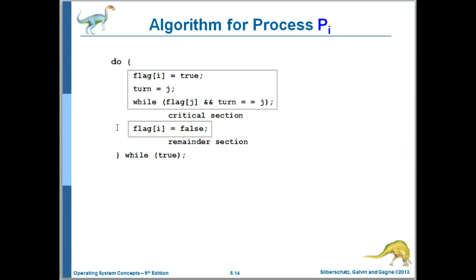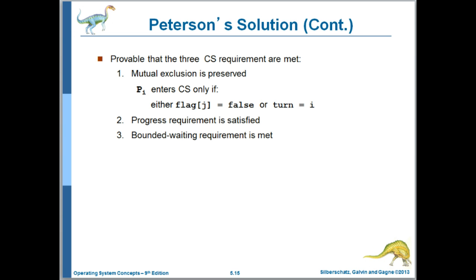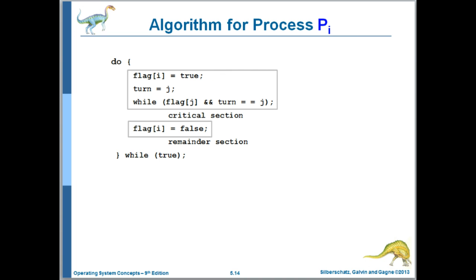Let's review the three properties of a solution to the critical section problem. So once again, we need to ensure that the solution has these three properties, mutual exclusion, progress, and bounded waiting. If one process, let's say a process j is in its critical section, and process i starts to execute its entry code, we said that i sets its flag true, it sets turn to j, and, well, j is in its critical section, so flag for it will be true, and turn will be j, i set turn to j, so i will wait here.